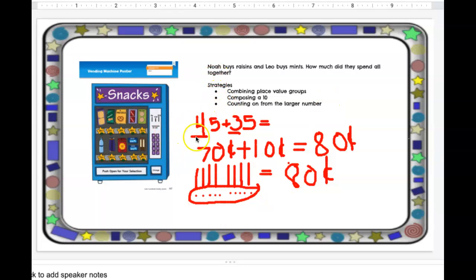Three strategies. Adding the tens, then adding the ones, then adding them together. Longs and cubes. And on the 100 grid. Did you try any of those strategies?